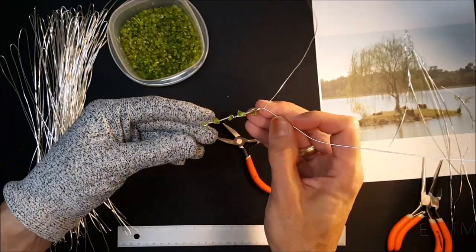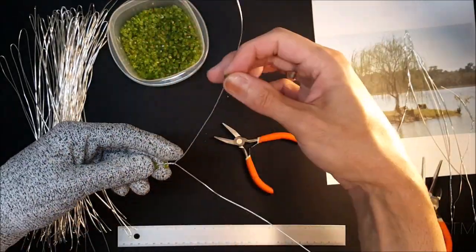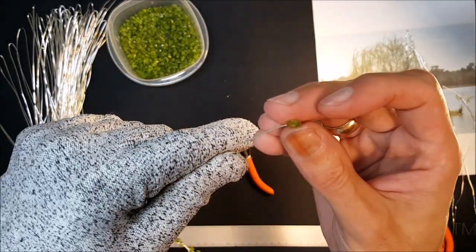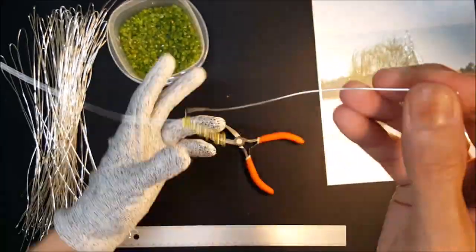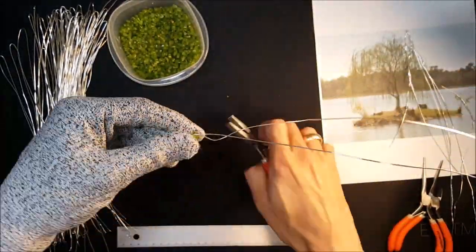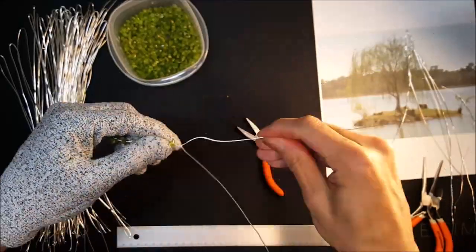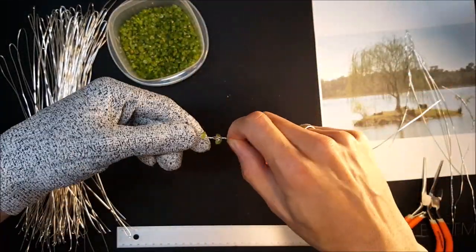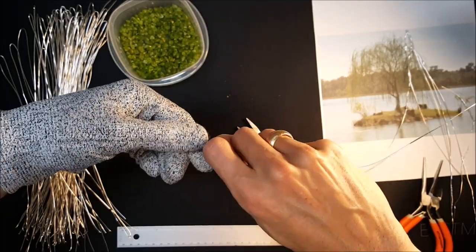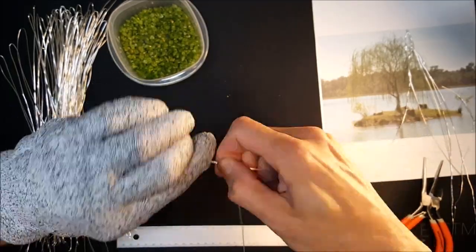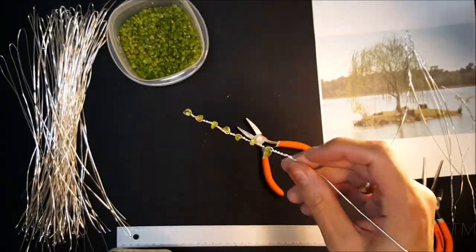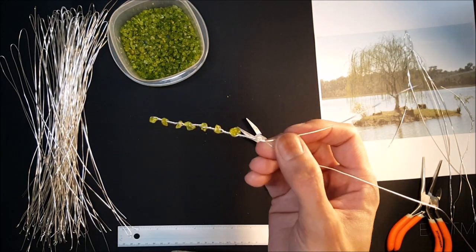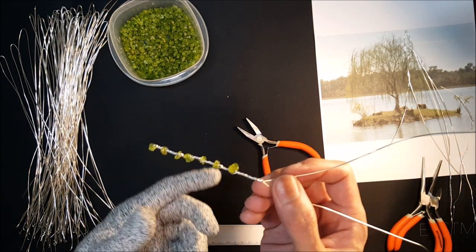I'm gonna do about five or seven beads per branch. The last one I'm gonna do seven twists. And that's going to be one branch. Now let's make a whole bunch more. This is gonna take a while.